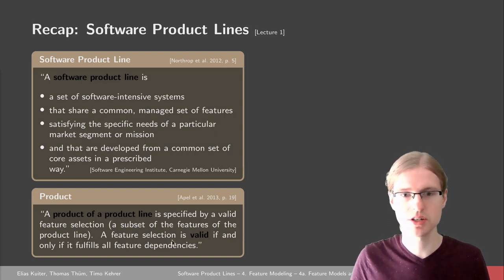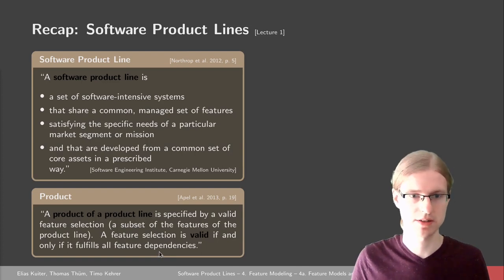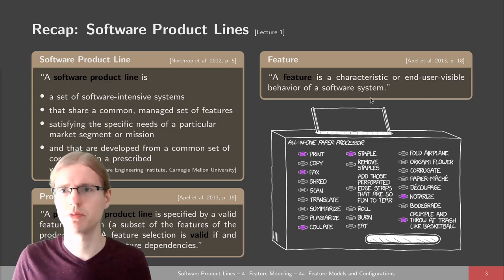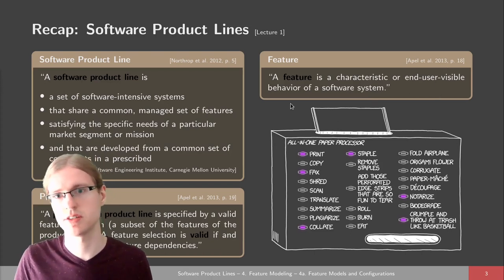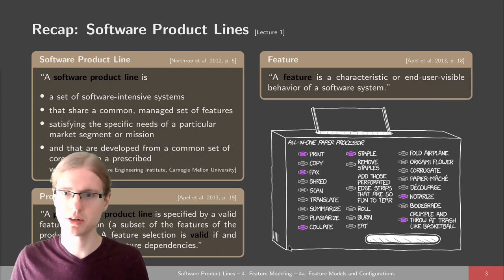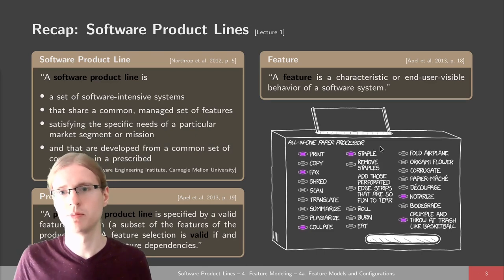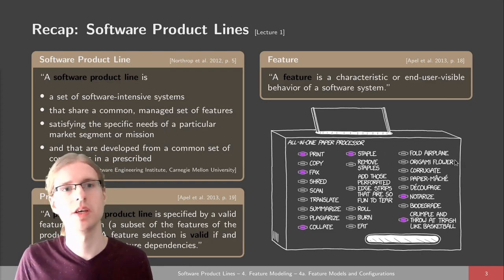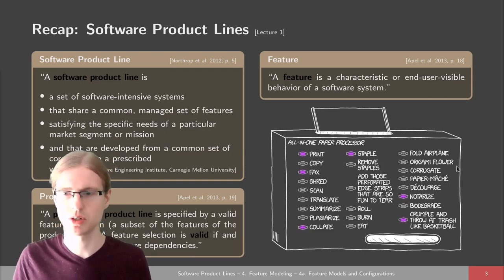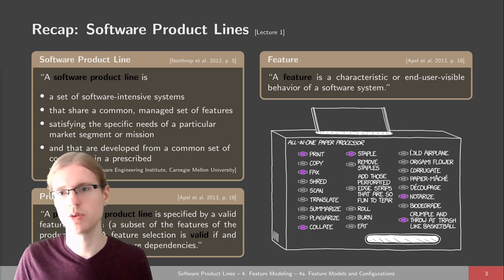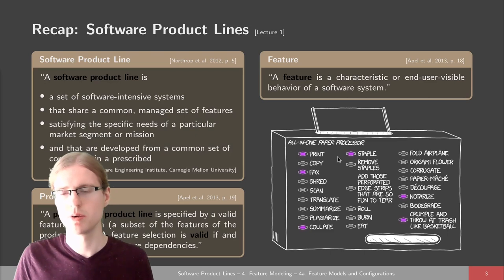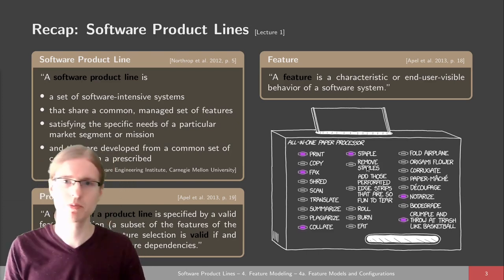One product in a product line is specified by a valid feature selection — a subset of the features of the product line. Such a configuration can be valid only if it fulfills all feature dependencies. A feature is a characteristic or end-user visible behavior of a software system, according to Appel et al. At the example of the printer or paper processor, there are many features: print, copy, fax, staple, fold origami, and so on. One question is whether we really need all these features. Another question is how these features relate to each other — for example, stapling printouts doesn't make sense if we don't print anything, so features have dependencies.